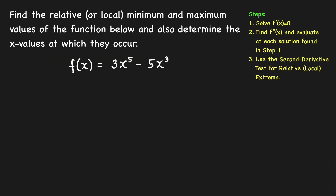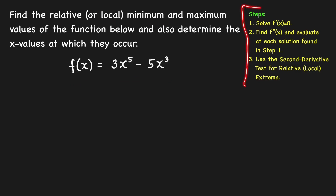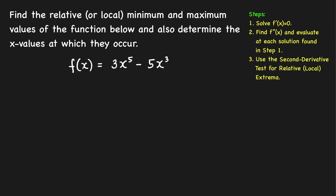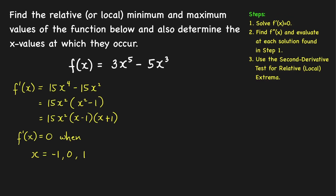First example: let's find the local extrema of this function and also determine the x values at which they occur using the second derivative test. Following step one, we solve the equation f prime of x equal to zero. The derivative of this function is equal to 3 times 5x to the 4th, which is 15x to the 4th, minus 5 times 3x squared, which is minus 15x squared.